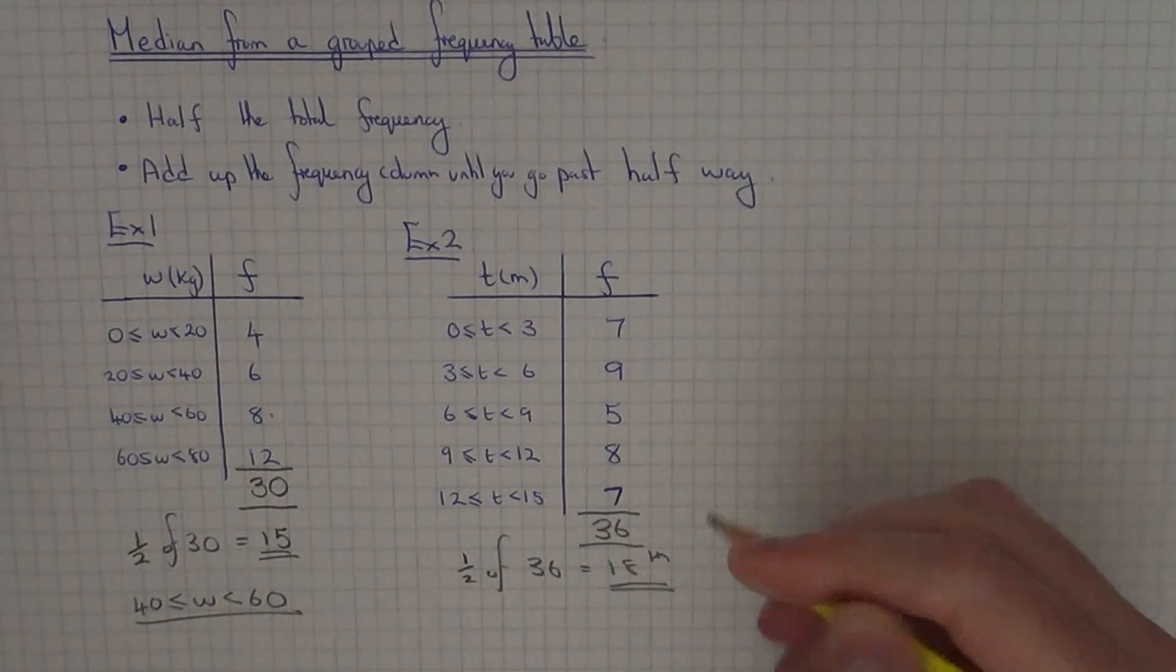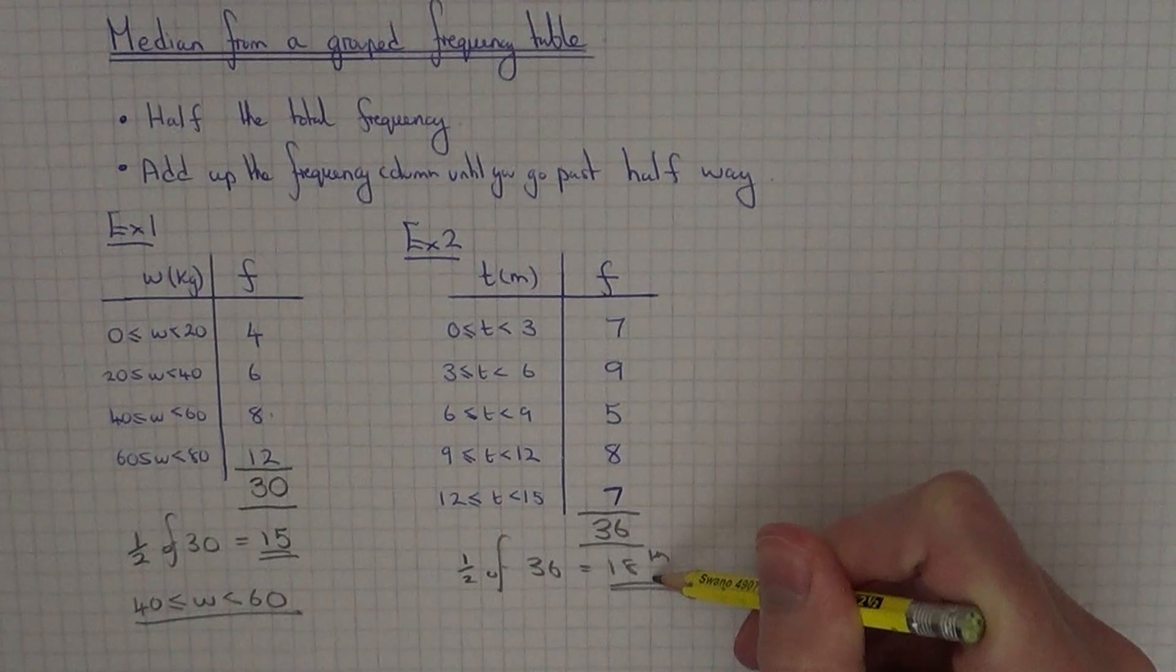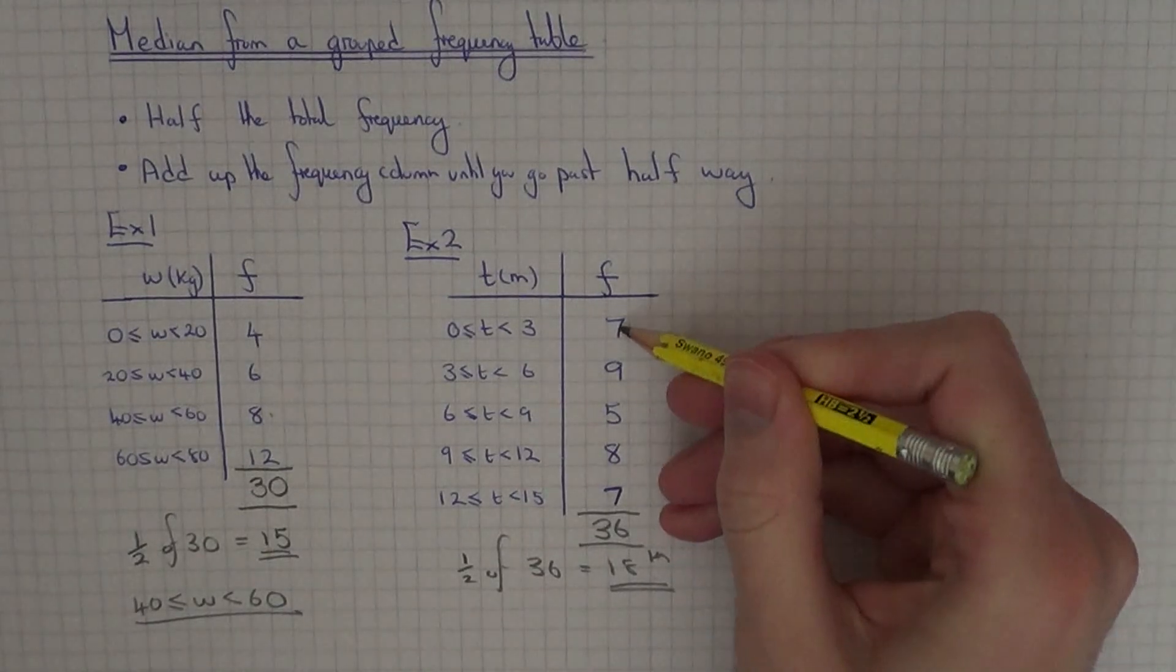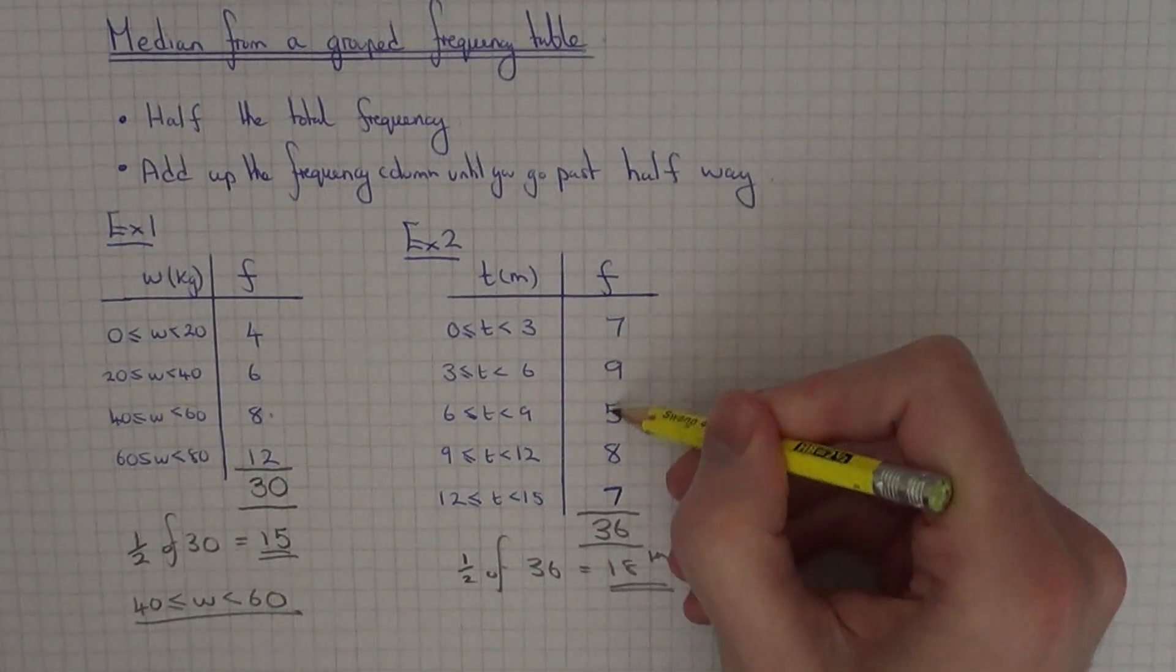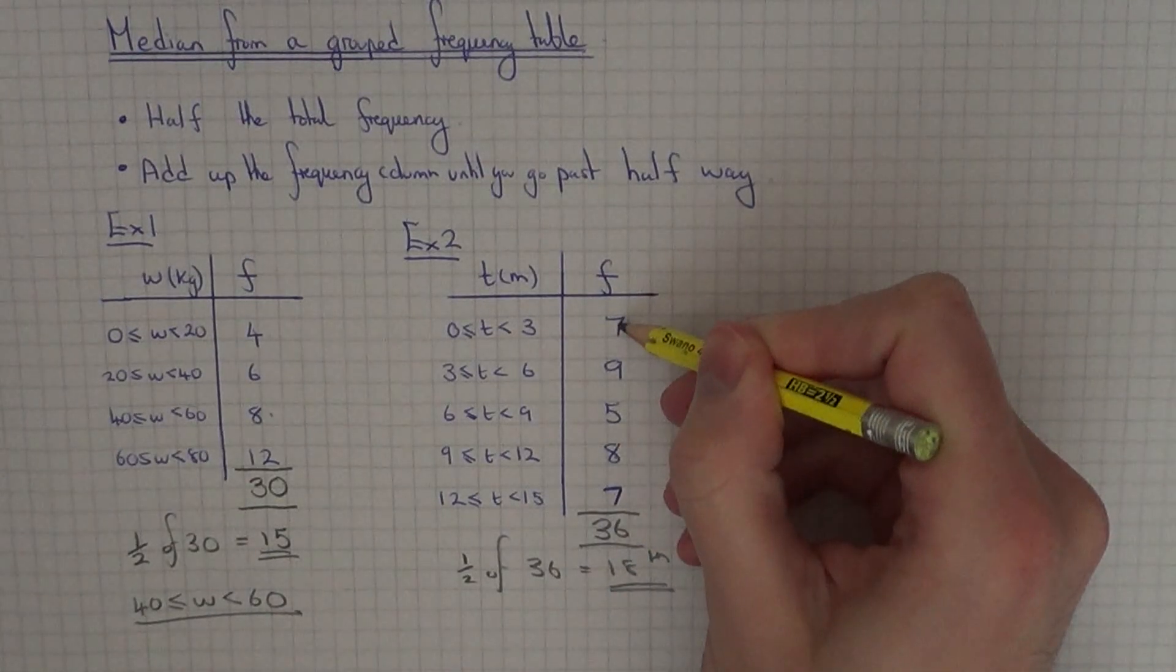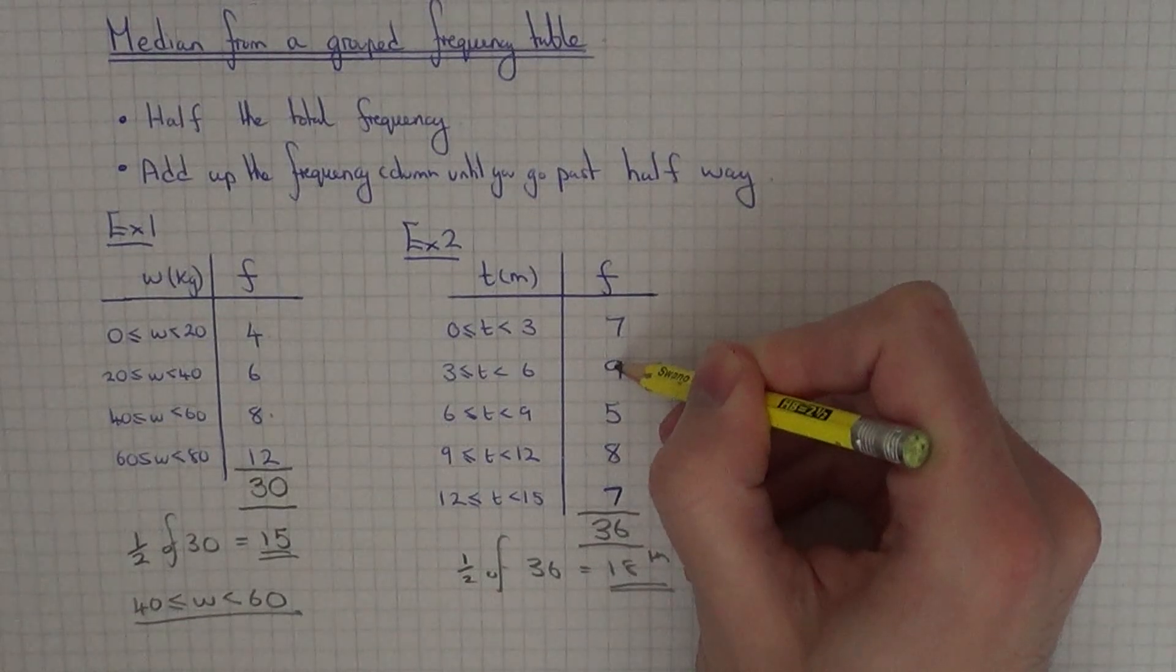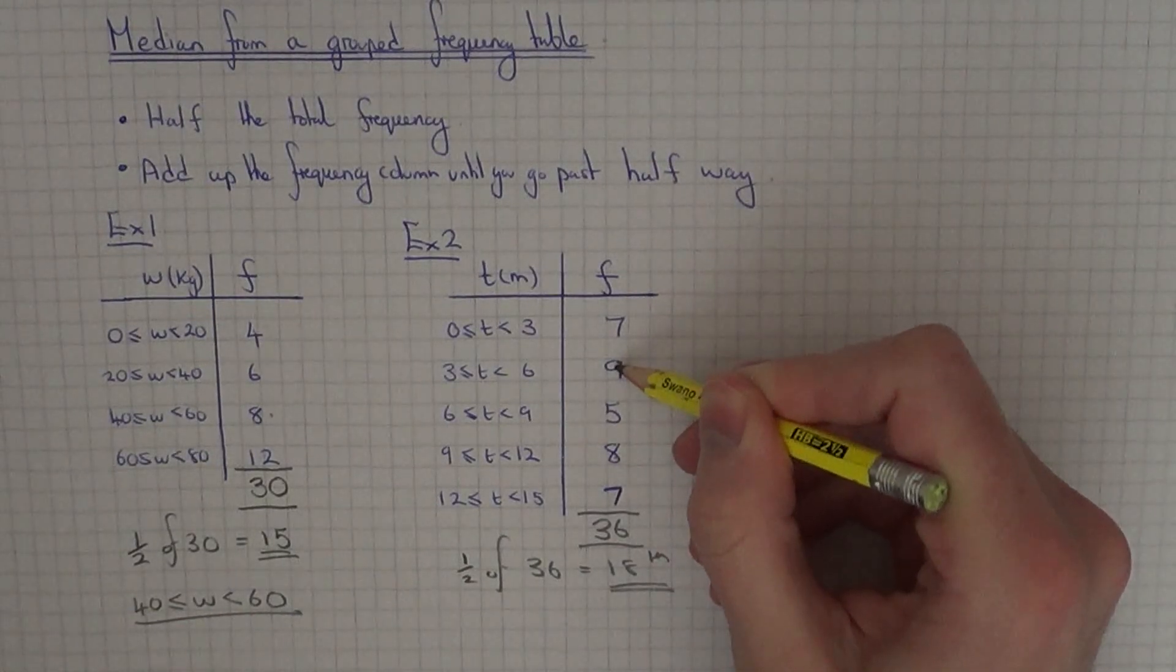That will tell us that the median person will be the 18th one. If we go back to the top of the frequency table and keep adding these numbers up until we go past 18. I start on 7 so we haven't gone past 18 yet. Add on 9, that takes us to 16, so we're nearly there now.